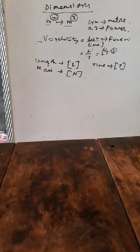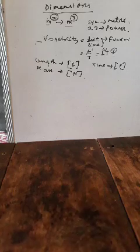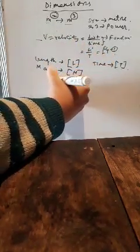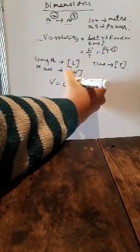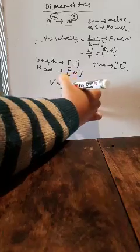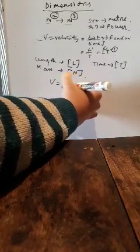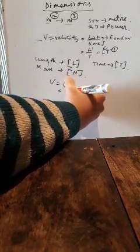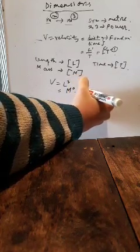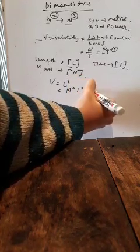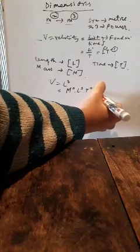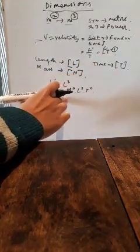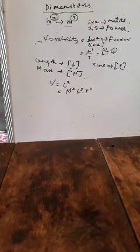Let's take another example: volume. I hope you also know that the dimension of volume is L cubed. That means length cubed is your volume. How will you express it? L cubed. Or in another way, you can also write it as M to the power 0, L to the power 3, and T to the power 0.